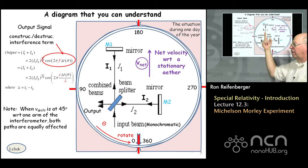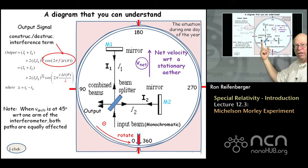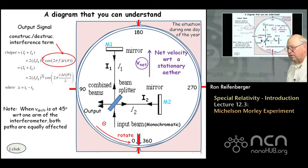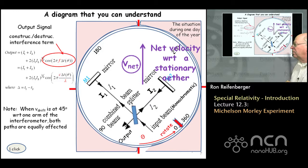There's some net drift velocity of the ether. For the sake of argument, I align that net drift velocity with beam I1 to begin with. What I'm going to be interested in is measuring the shift in this interference pattern as this entire apparatus is rotated in a very precise way — making measurements as a function of rotation angle.